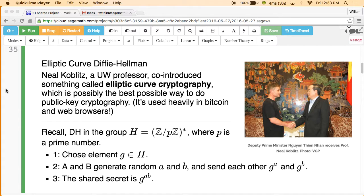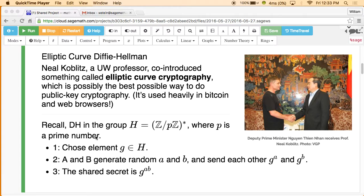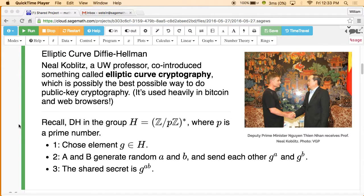He's a number theorist, and he and this other guy, Victor Miller, I think independently introduced elliptic curves as an alternative to working with numbers modulo p directly. So I'm just going to give you a sense of how that works and show you a real example.